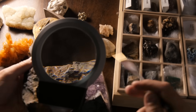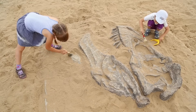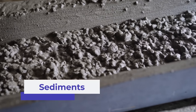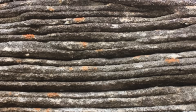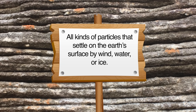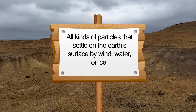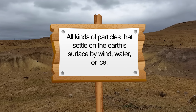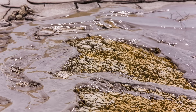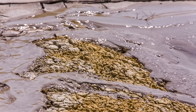Fossils may be found in the dirt or even deeper in the crust below. There are also sediments. Sediments are all kinds of particles that settle on the Earth's surface by wind, water, or ice — kind of like the alluvium that makes the fan-shaped landform that we saw before.